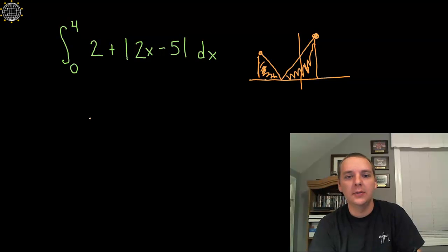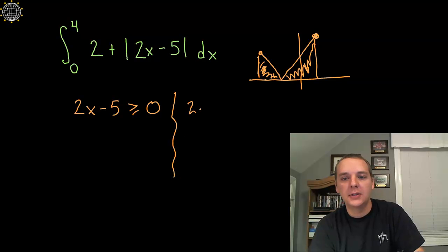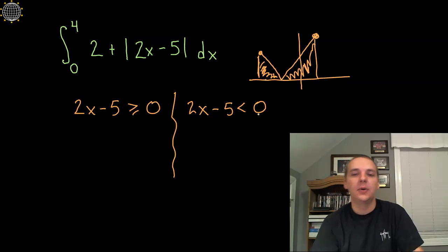So we're going to set 2x minus 5 to be greater than or equal to 0, and then we're also going to set 2x minus 5 to be strictly less than 0. So we'll not only see where the vertex is, but we'll also have an idea of which one to leave alone in our new integrand and which one we need to make negative in our new other integrand.